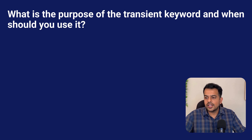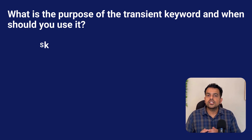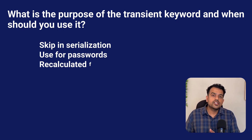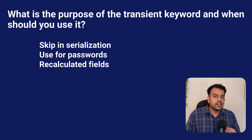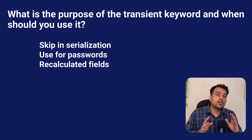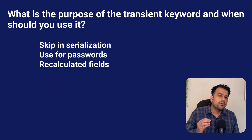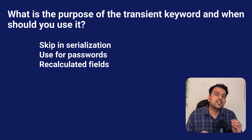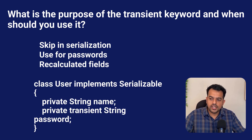The next question is: what is the purpose of the transient keyword and when should you use it? Transient tells Java to skip that field during serialization — when the object is converted into bytes, transient fields are simply ignored. This is useful for sensitive information like passwords. It's also used for fields that don't make sense to serialize, like fields that handle threads, or fields you can easily recalculate when the object loads again. Developers use transient to control how much data they actually want to store or transfer over the network.